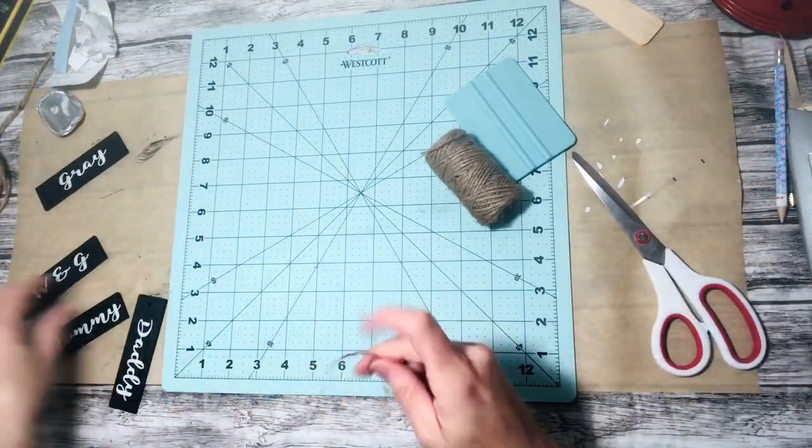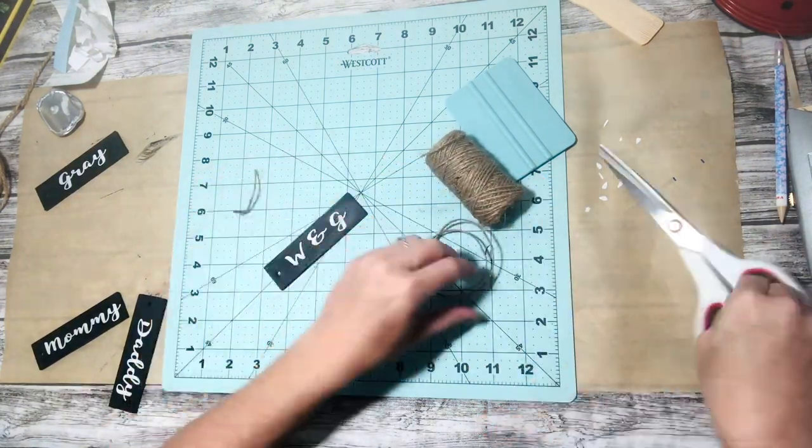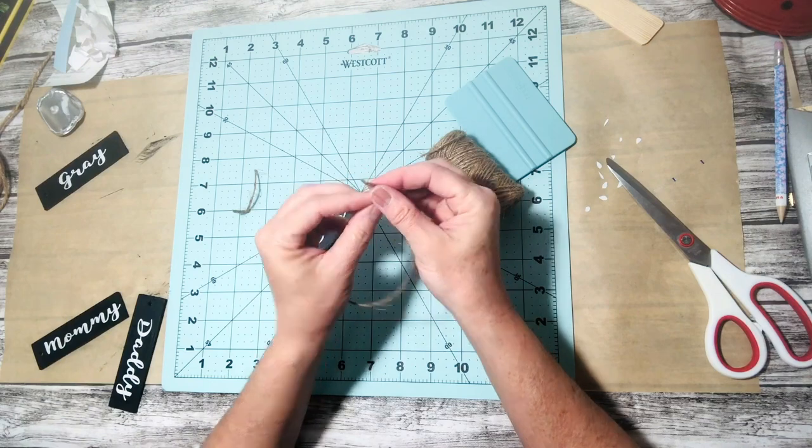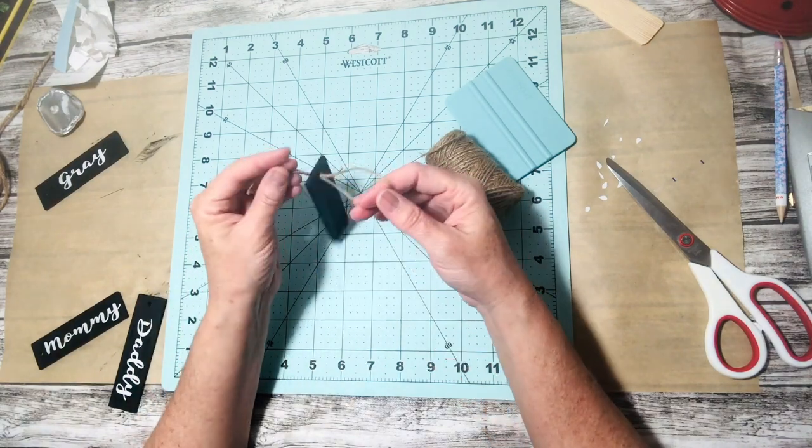I am attaching the hanger by putting both ends of the jute twine through the hole and tying it in a knot. If you don't have a drill, you can glue both ends to the back with a glue gun.